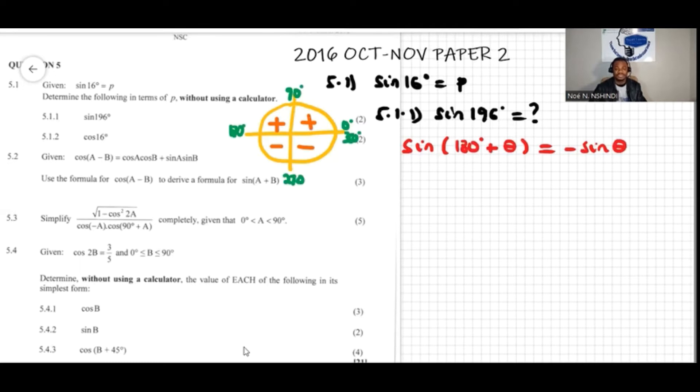Now when they said 180 plus theta, because 180 is over here, so 180 plus theta means we are in these quadrants where sine is negative. Reason why when we reduce sine of 180 degrees plus theta, this is equivalent to negative sine theta.